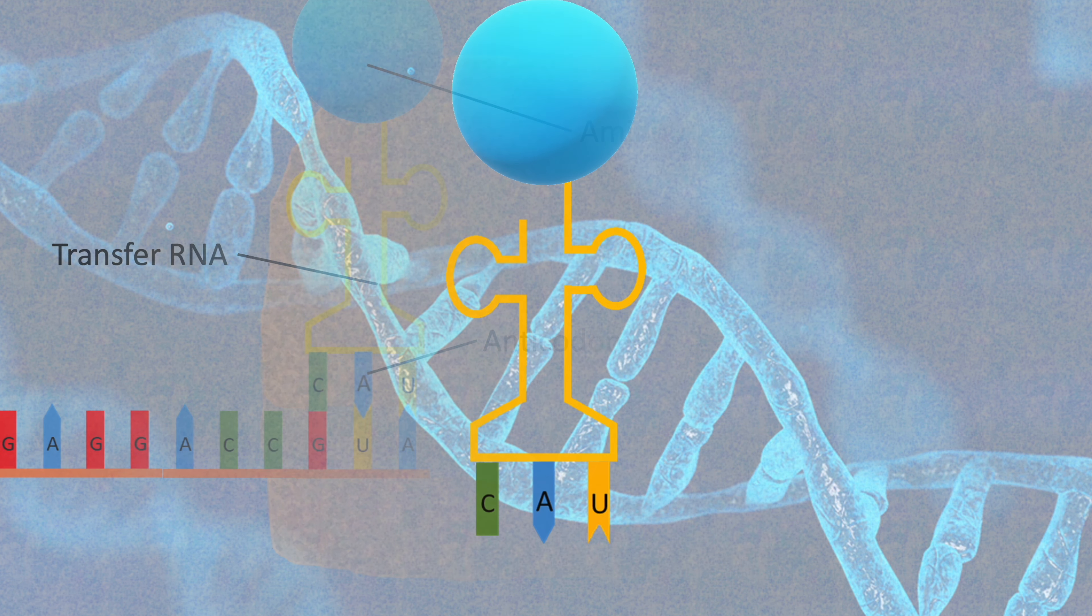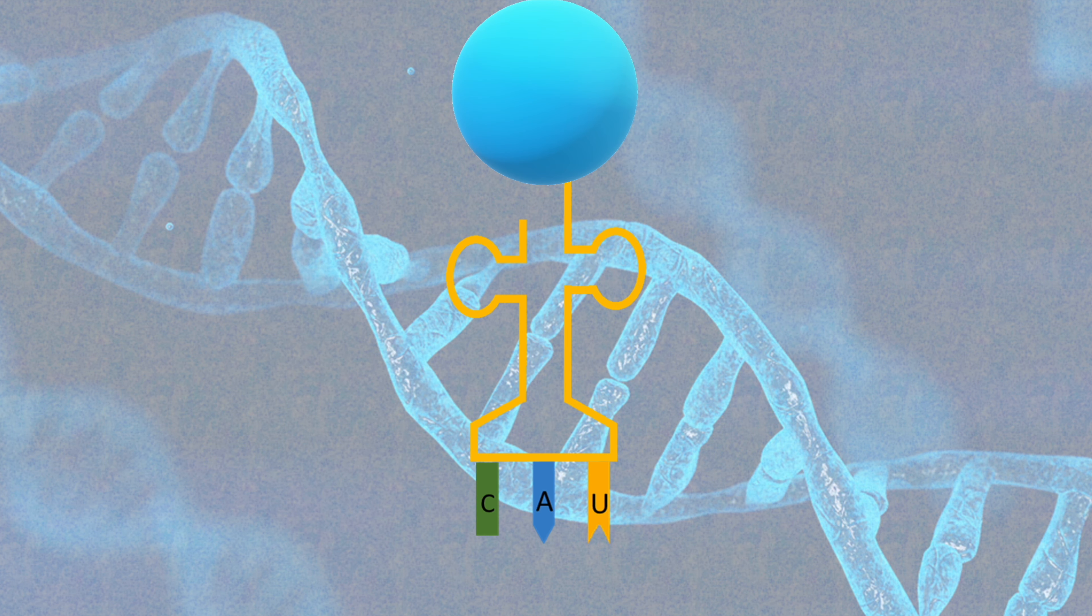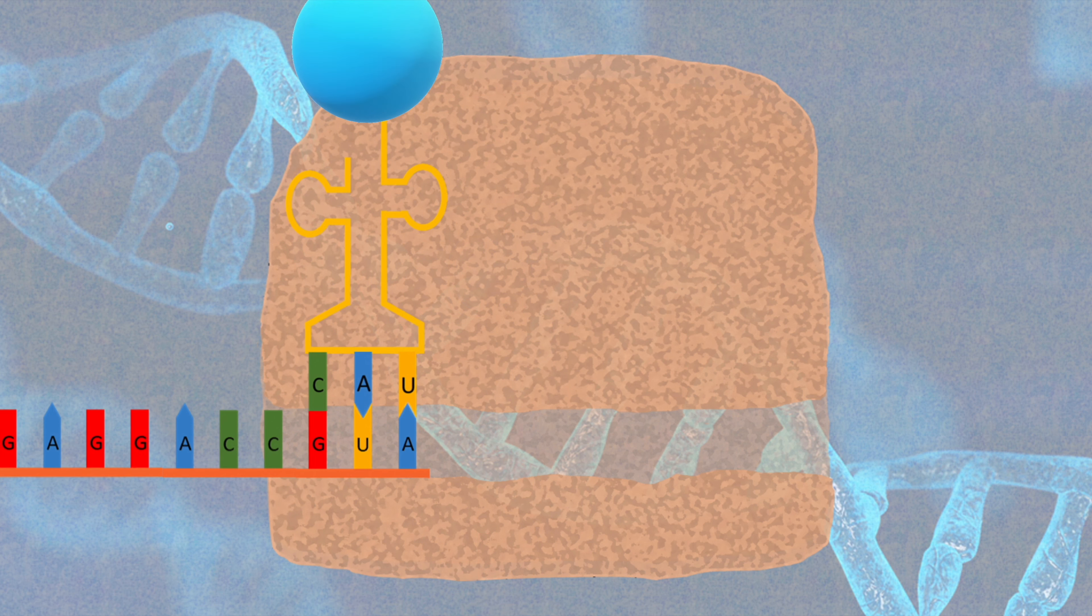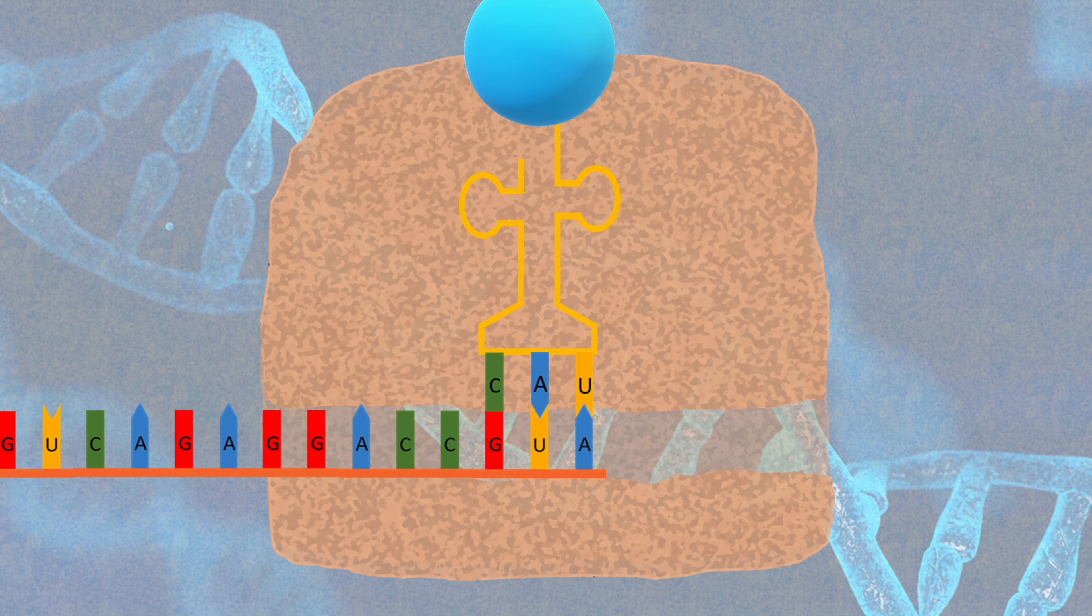For example, the tRNA with the anticodon UAC has the amino acid methionine attached to it, because the codon to which this tRNA is going to bind to is AUG, the codon that codes for methionine. After the first tRNA is attached, the second codon is read and a tRNA with the matching anticodon and amino acid comes and binds itself to the second codon.